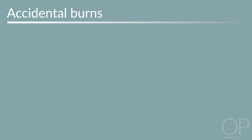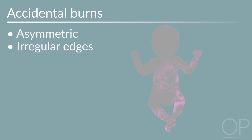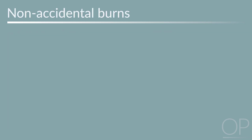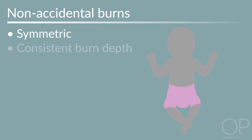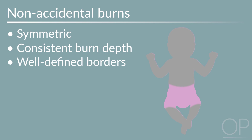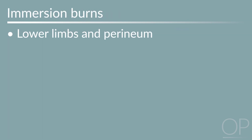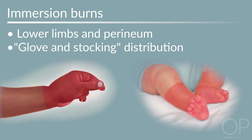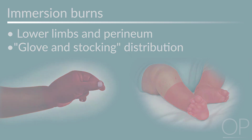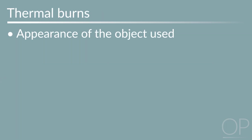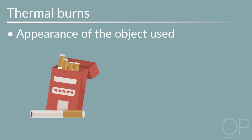With regard to burns, accidental burns, such as those caused by pulling over a pot of boiling water, tend to be asymmetric and characterized by irregular edges. Burns caused by non-accidental scalding immersion, however, tend to be symmetric with consistent burn depth and well-defined borders. Immersion burns can affect the lower limbs and perineum, especially if occurring in association with toilet training, or may be in a glove and stocking distribution affecting the hands and feet. Thermal burns may take on the appearance of the object used, such as a cigarette or iron.